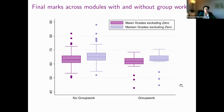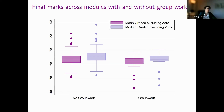When we actually try to see the overall average grades and median grades, and split it between group work and no group work — meaning comparing the modules that have a group work component to the modules that don't — and when we say group work component, we mean summative assessments, we actually see that the modules with group work have slightly lower median averages compared to the modules without group work.